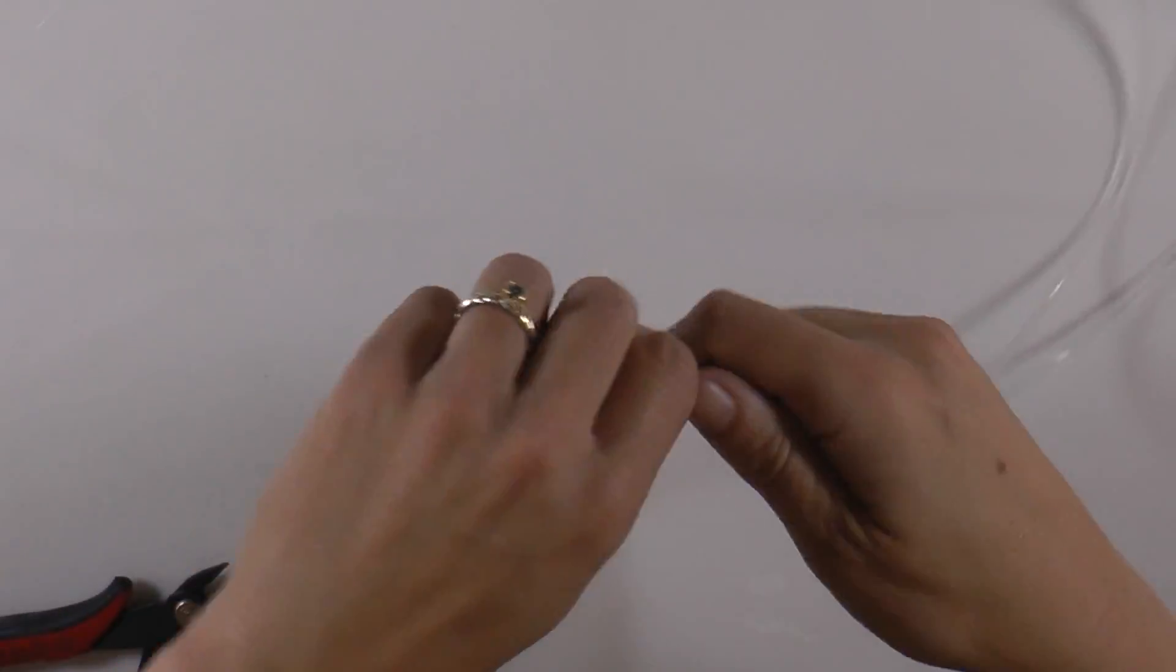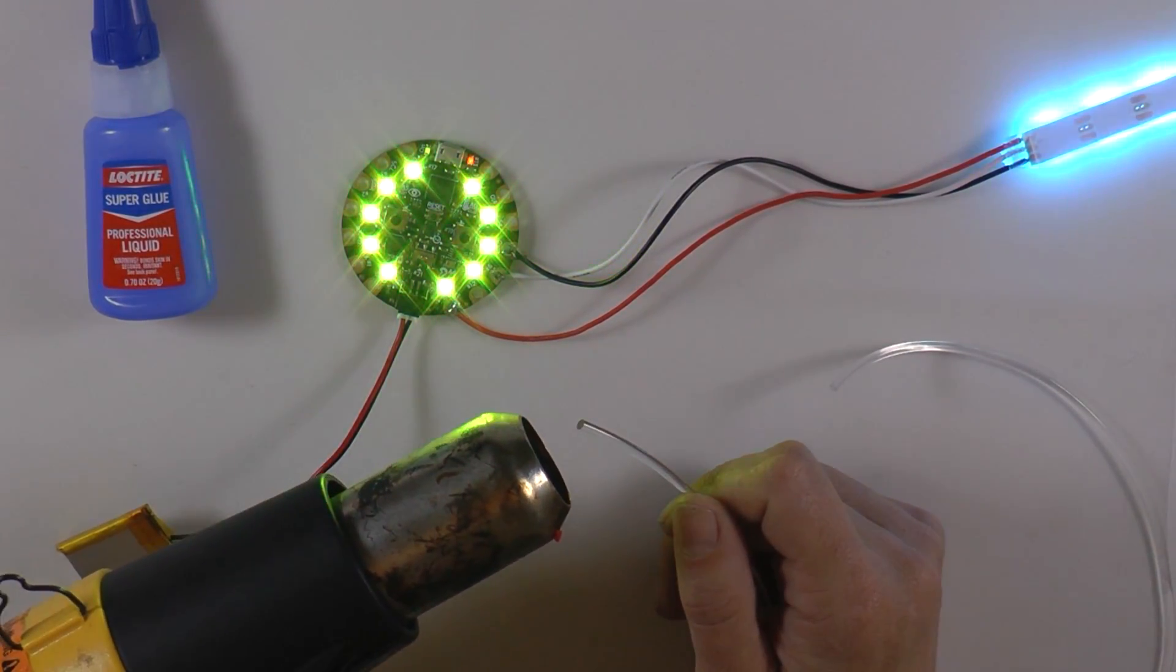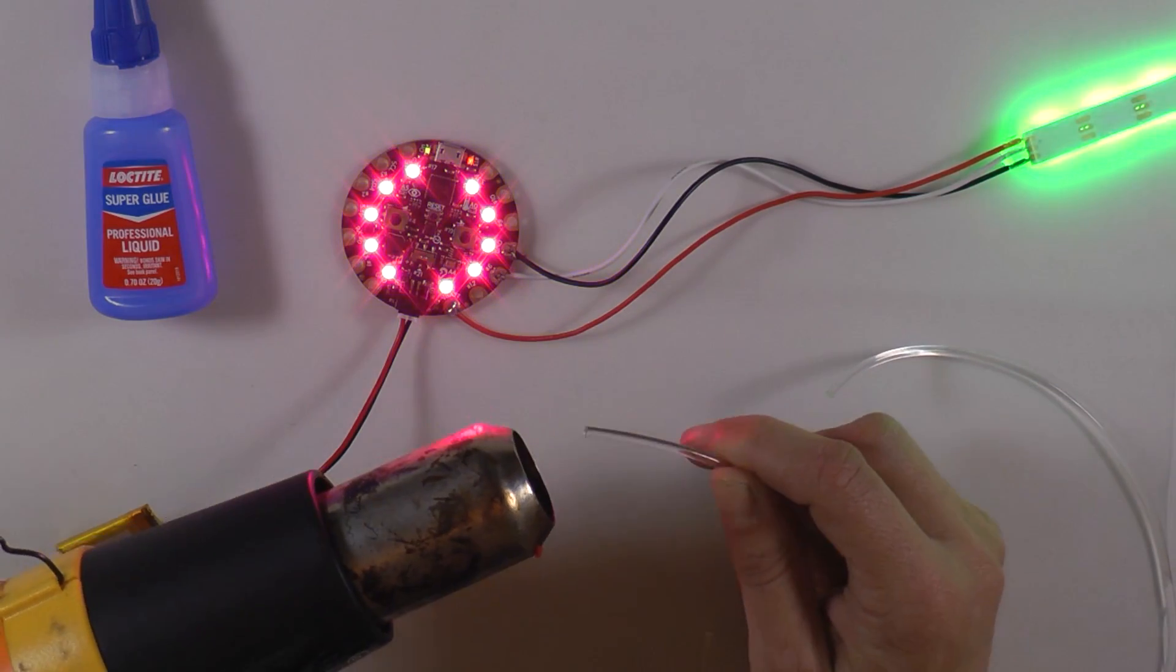Cut your LED light pipe to length. Use your heat gun to gently melt the light pipe until it becomes gooey.